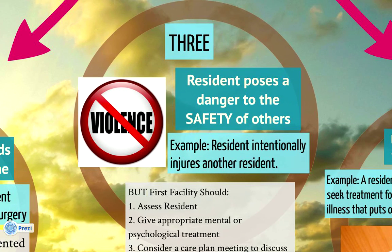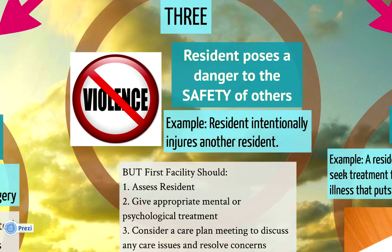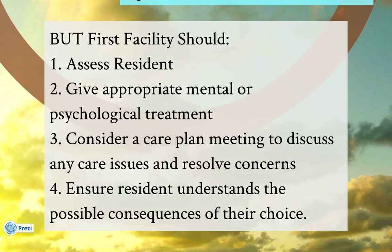A third situation in which discharge is appropriate is when a resident poses a danger to the safety of others, for example if a resident intentionally injures another resident. However, a nursing home facility is there to care for the resident, so discharge should not be the first choice. The facility should assess the resident, give appropriate mental or psychological treatment, consider a care plan meeting to discuss care issues, and ensure the resident understands the possible consequences of their choices.